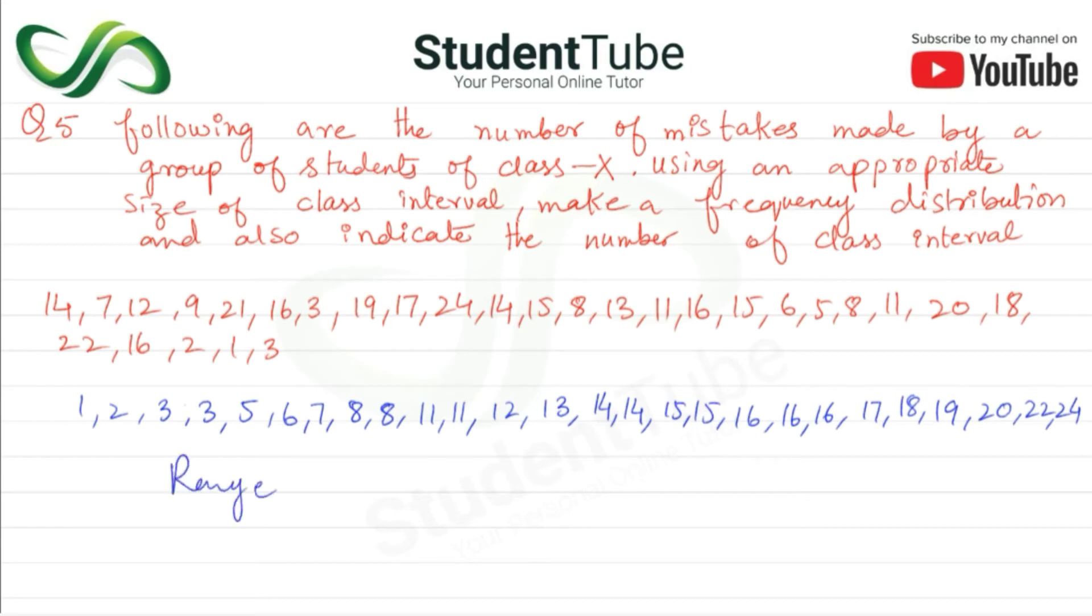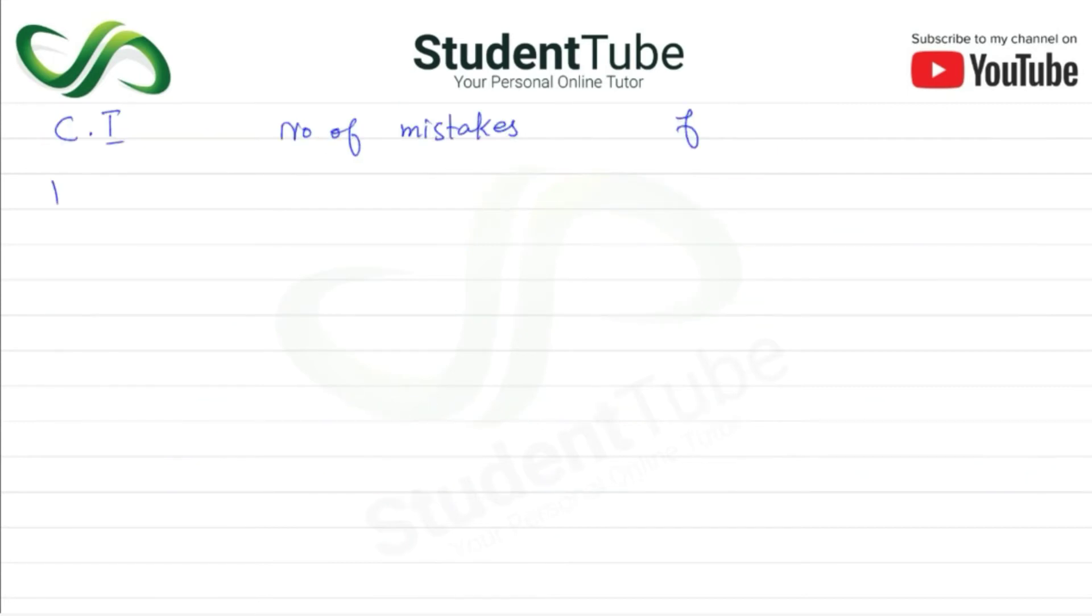Range is equal to maximum minus minimum. So maximum is 24 minus 1, which equals 23. We are taking here class interval width, CI is equal to 5.